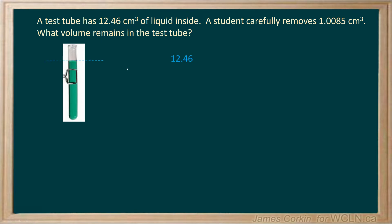So at first glance this is pretty straightforward. We have our 12.46 to begin with and to figure out how much is left we would subtract the amount that the student removed.